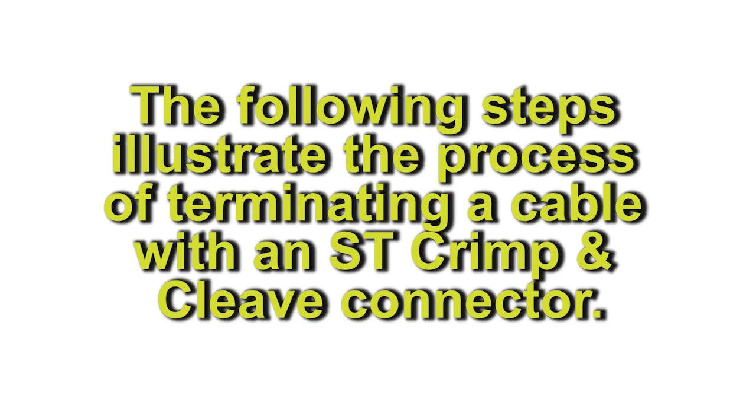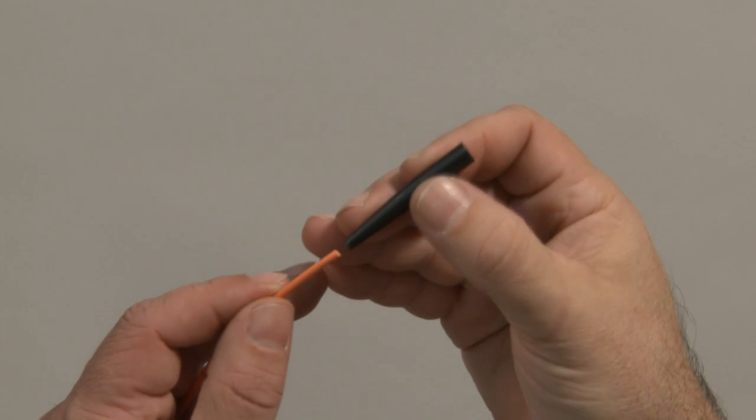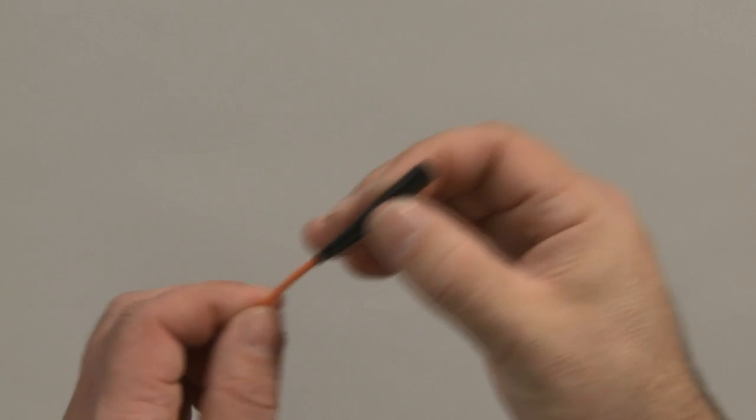The following steps illustrate the process of terminating a cable with an ST crimp and cleave connector. Slide the strain relief boot onto the cable, narrow end first.